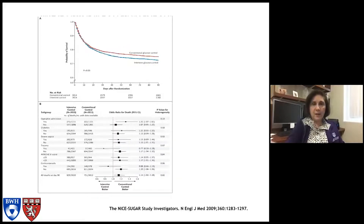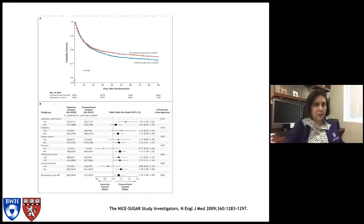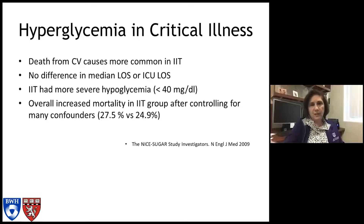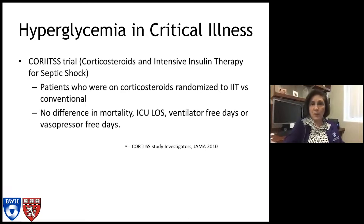The surprise came from the Kaplan-Meier survival curve: the conventional glucose control group in orange did better than the intensive glucose control group in blue. People with conventional glucose control actually did better overall. Key findings: death from cardiovascular causes was more common in the intensive insulin therapy group; there was no difference in median length of stay or ICU length of stay; the intensive insulin group had more severe hypoglycemia and increased overall mortality, even after controlling for many confounders.